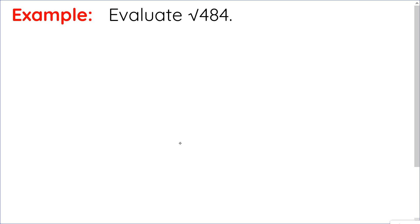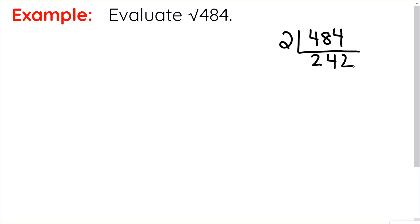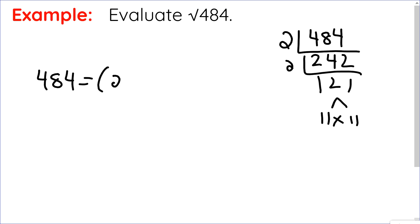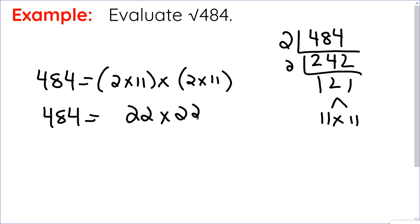Let's try the square root of 484. I notice 484 is even, so I'll start with short division, dividing by 2. 484 divided by 2 is 242. I can't see two identical factors yet, so I'll divide by 2 again — half of 242 is 121. Now I can see 121 is 11 times 11. So 484 splits into two equal groups: 2 times 11 and 2 times 11, meaning 484 is 22 times 22. Therefore, the square root of 484 is 22.